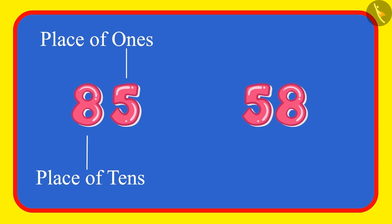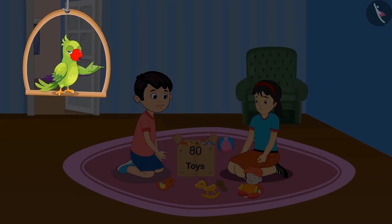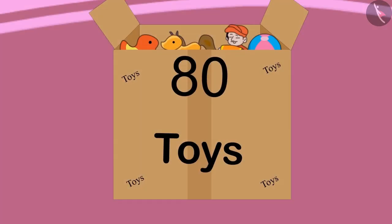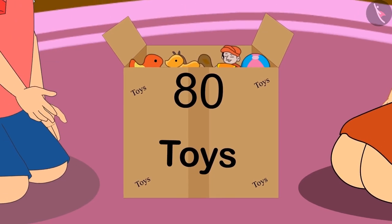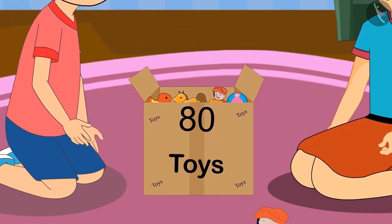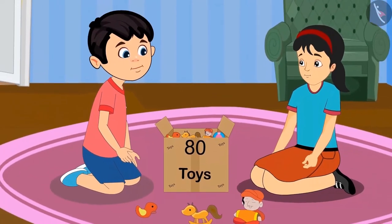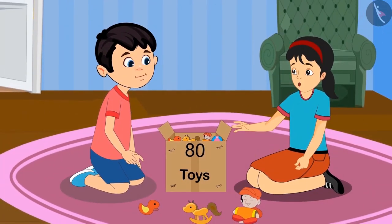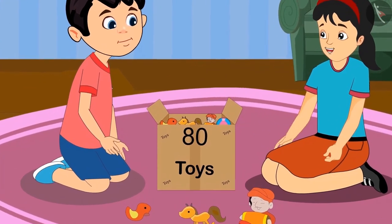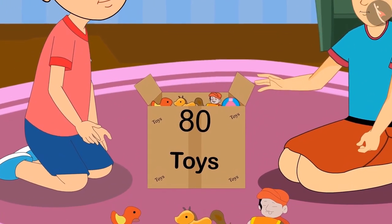Let us see one more example. Today, Chotu and Pinky are playing with their toys. Pinky, it's written on top of this box that this box has 8 toys in it. But it seems there are more than 8 toys. Yes Chotu, you are right. This box has more than 8 toys.